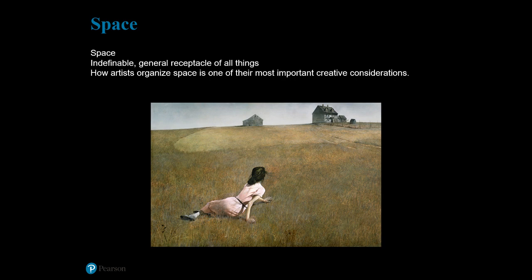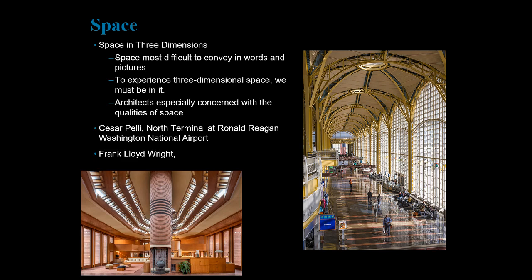Your book describes space as the indefinable general receptacle of all things. Christina's World by Andrew Wyeth depicts a woman in the middle of a treeless field looking up at a gray house on the horizon line — a very well-known American painting from the mid-20th century. Wyeth depicts the illusion of vast open space through the use of atmospheric perspective. As your book poignantly declares, space is somewhat difficult to convey with words and pictures, especially actual three-dimensional space. You must be in it to truly understand it, because we experience space as a relationship between our bodies and the people, objects, and surfaces around us.